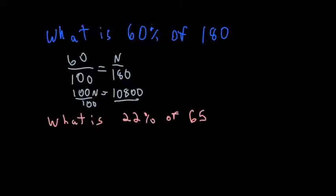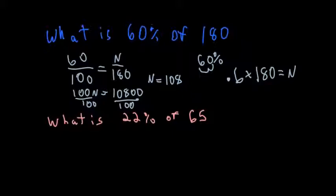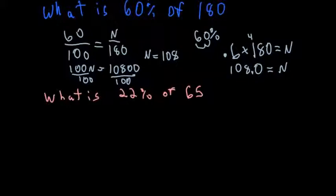So I'm going to divide by 100. I get N equals 108. If I want to do the equation for that, I change my 60% to a decimal, so I get 6 tenths times 180 equals my number. So now I need to multiply: 6 times 0 is 0, 6 times 8 is 48, carry my 4, 6 times 1 is 6 plus 4 is 10. I have one decimal place in my problem, so one in my answer. So I get N equals 108.